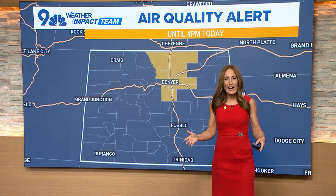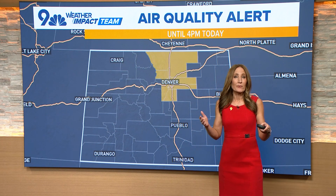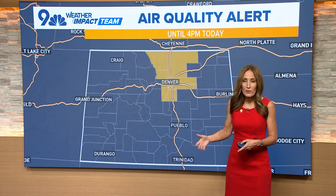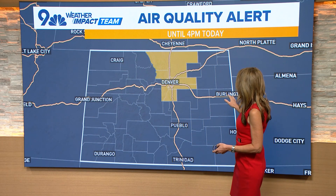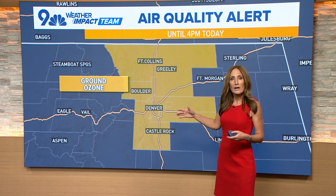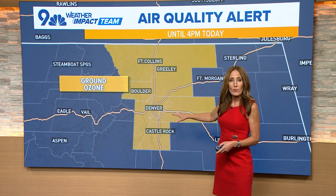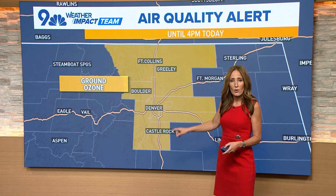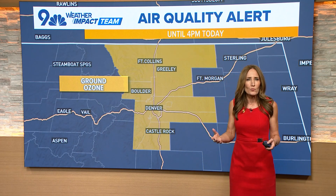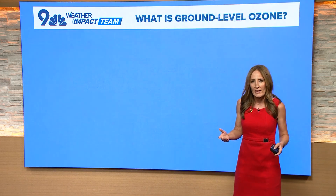Often when we get hot, stagnant weather conditions like we have today — like we had yesterday — we often get air quality alerts for poor air quality, basically high levels of ground ozone. That raises the question: what exactly is ozone?